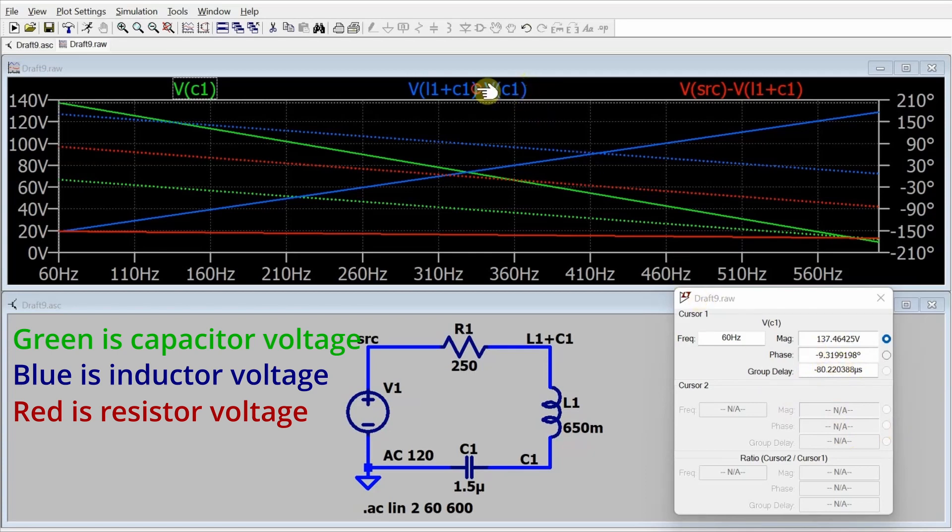And if I click on this one, this gives me the voltage across the inductor. It is 19.05 volts with a phase angle of 170.68 degrees.